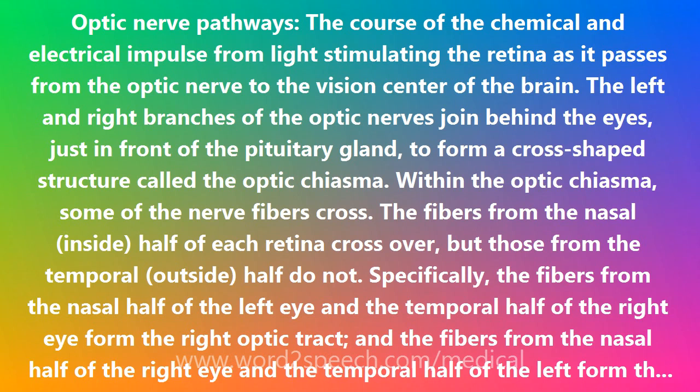Just before they reach the thalamus of the brain, a few of the nerve fibers leave to enter nerve nuclei that function in visual reflexes. Most of the nerve fibers enter the thalamus, forming a junction synapse in the back of the thalamus. From there the visual impulses enter nerve pathways called the optic radiations, which lead to the visual cortex of the occipital lobes of the brain.